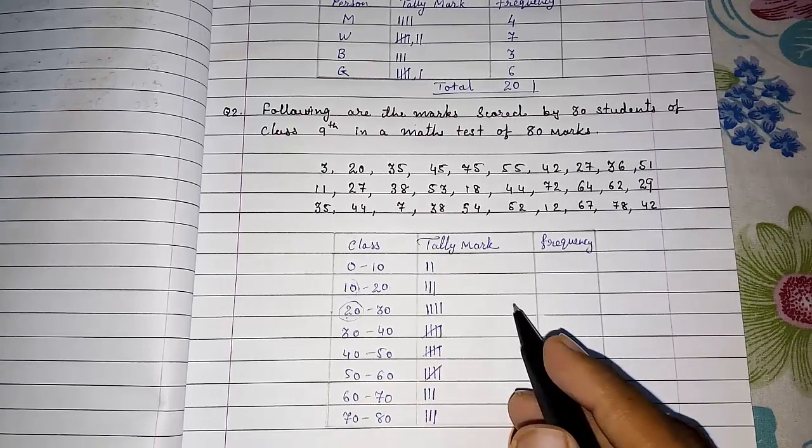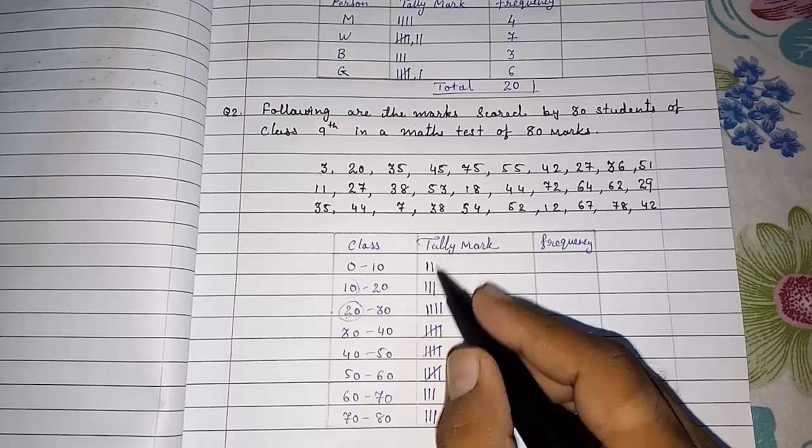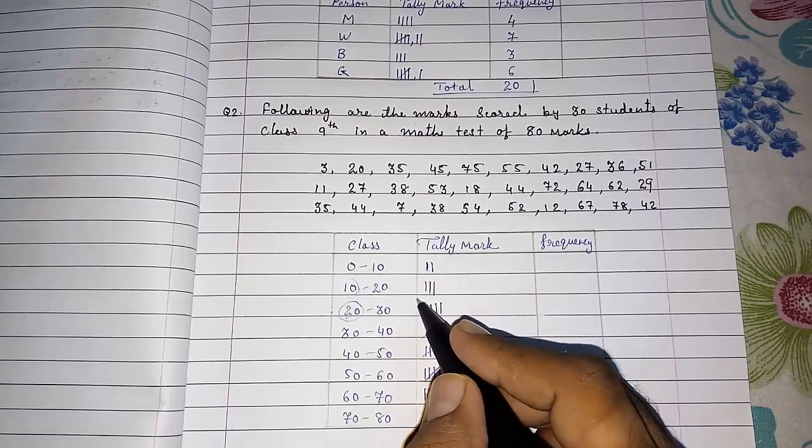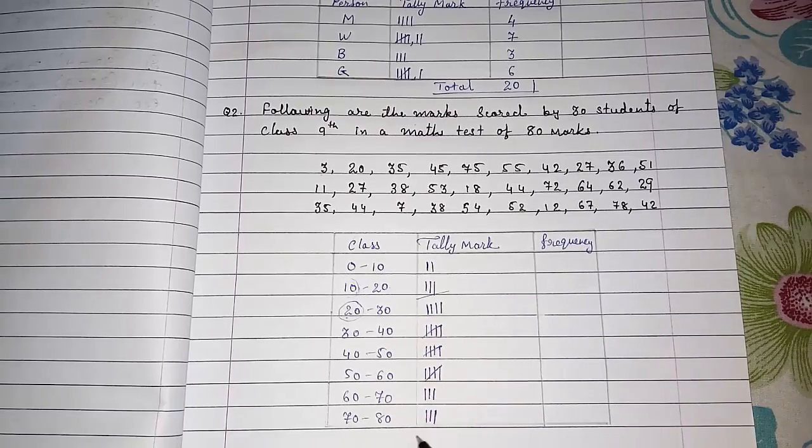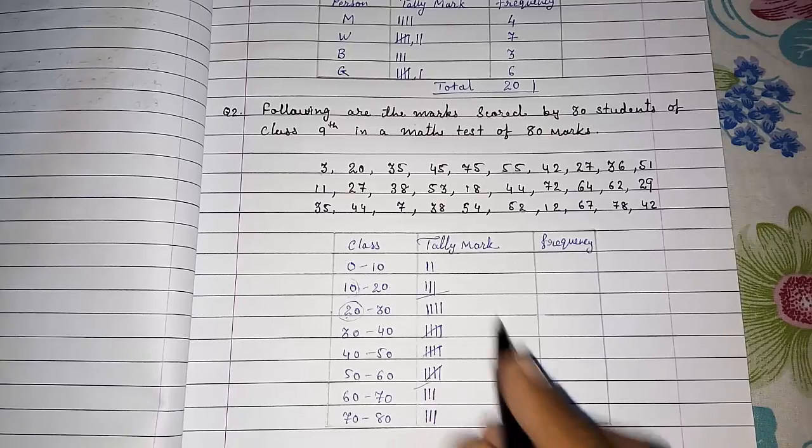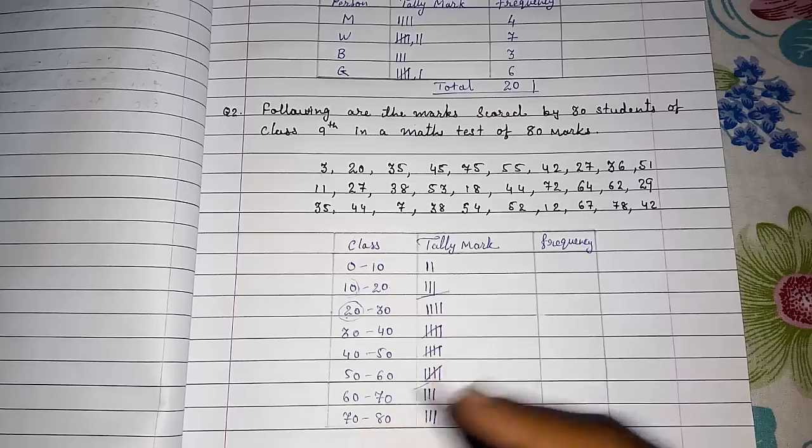These are the arrangements and I come to know that only two to three students are below twenty marks, and six students are more than, you can say, seventy or eighty percentage. So this I want to know from this data.